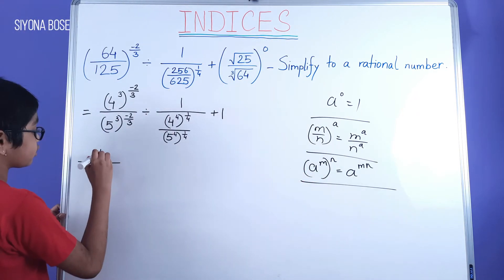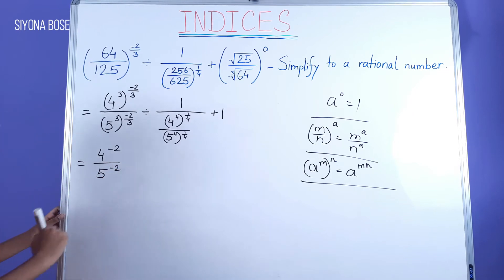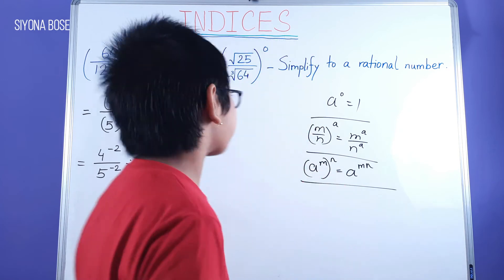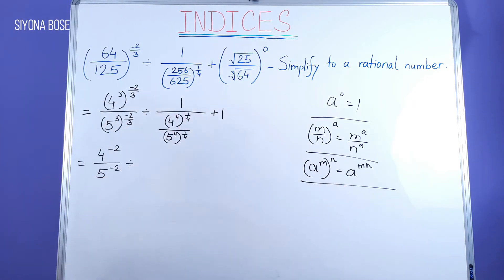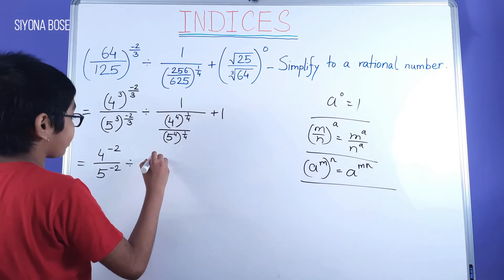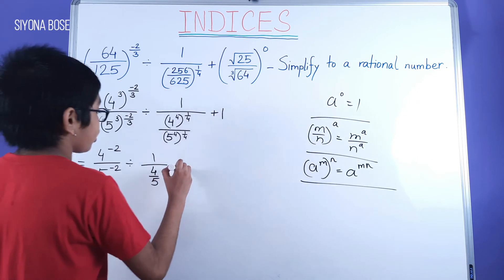And over here, if we apply the same thing, 4 and 4 gets cancelled in both the numerator and denominator. Finally, we have plus 1.